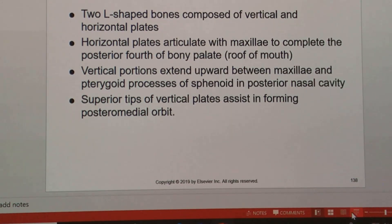The vertical portion extends upward between the maxilla and the pterygoid process of the sphenoid bone in the posterior nasal cavity. Superior tips of the vertical plates assist in forming the posterior medial orbit. Realistically, of all the projections of all the facial bones, the palatine bones are probably going to be of least significance.